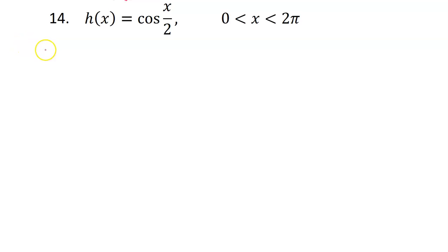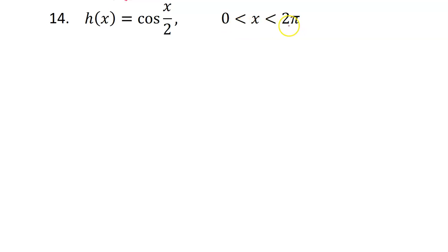Let's see if we can find the increasing and decreasing intervals for a trig function. Keep in the back of your mind that we are restricting ourselves to the interval between 0 and 2 pi. The steps are the same — start by finding the derivative, h prime.